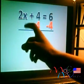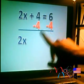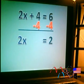2x, unaffected. 4 minus 4 is 0. 6 minus 4 is 2. 2x equals 2.